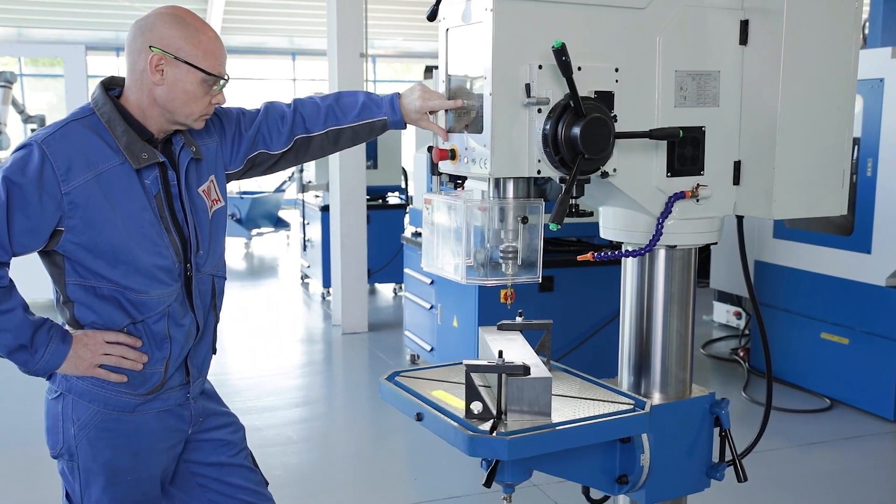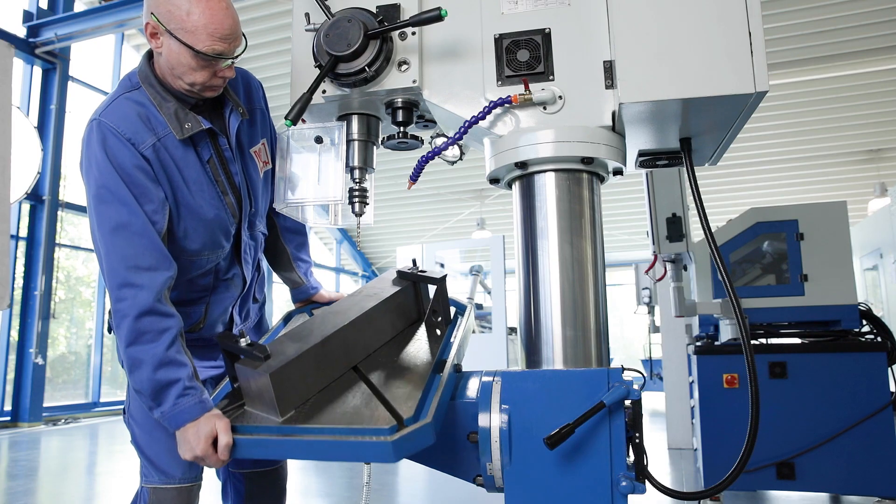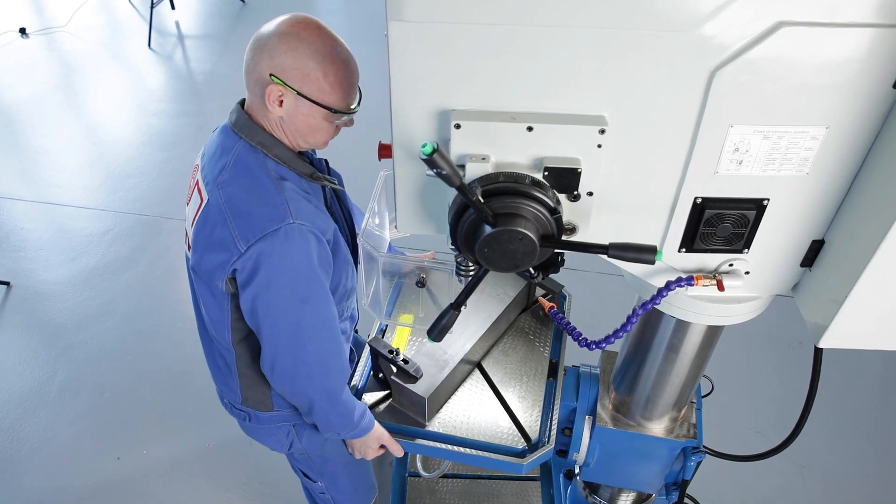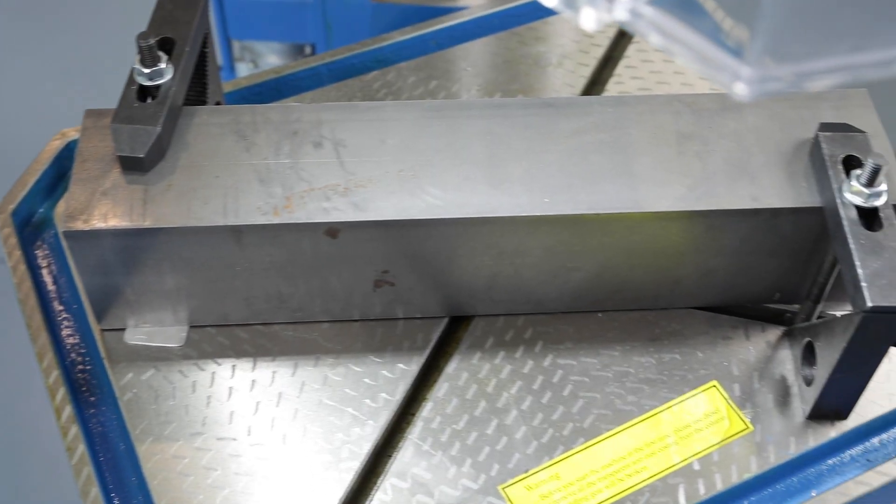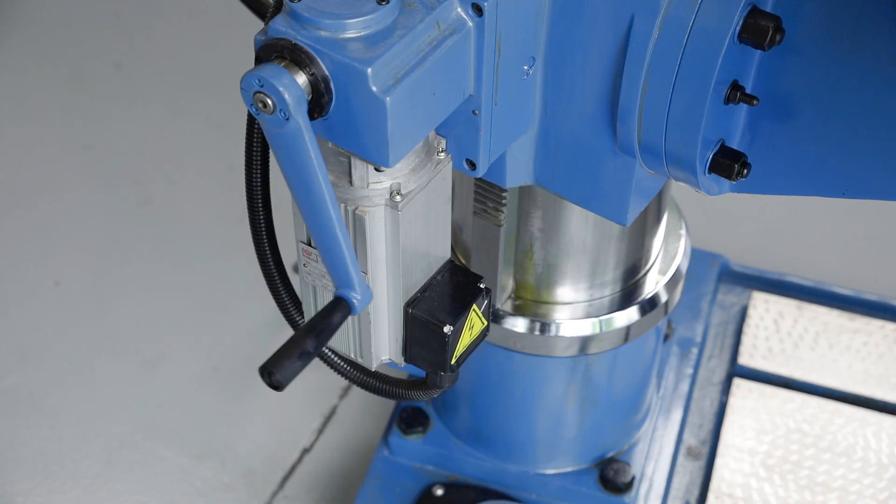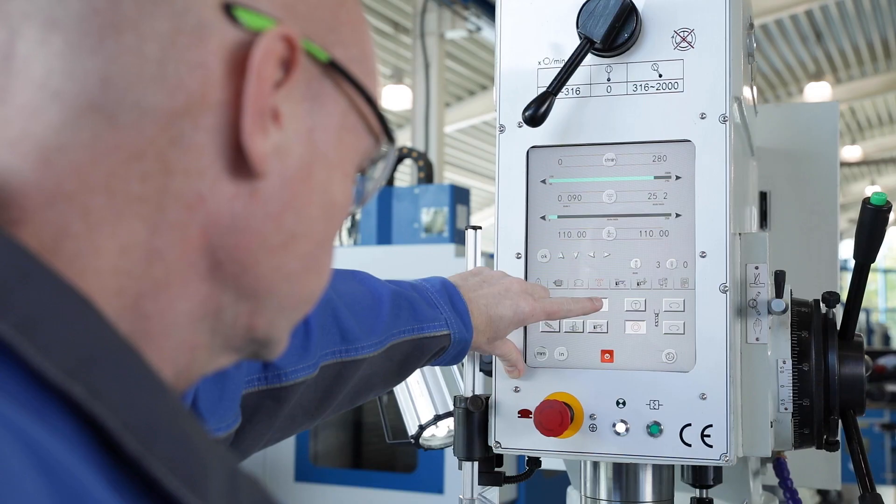The large stroke of the work table and its ability to rotate and pivot result in a large work area and a multitude of applications. The clamping table has plenty of space for clamping devices and workpieces. The height of the table is adjusted using a powerful motor drive.